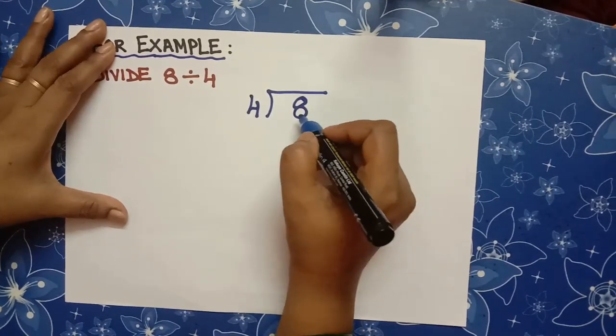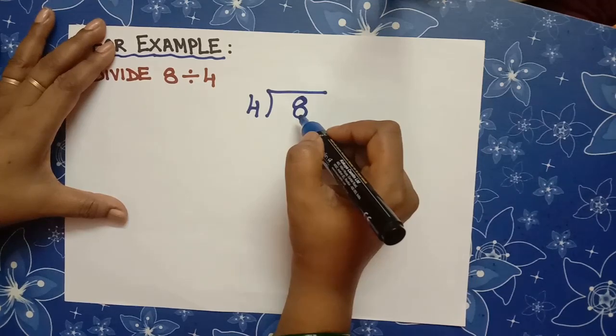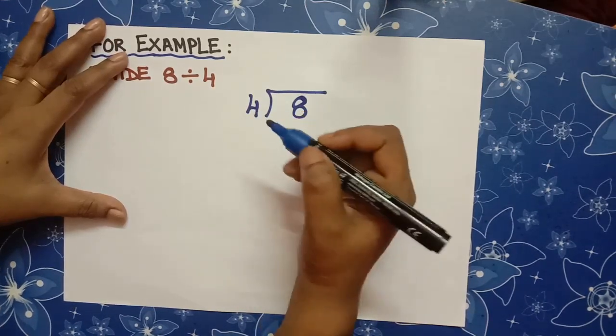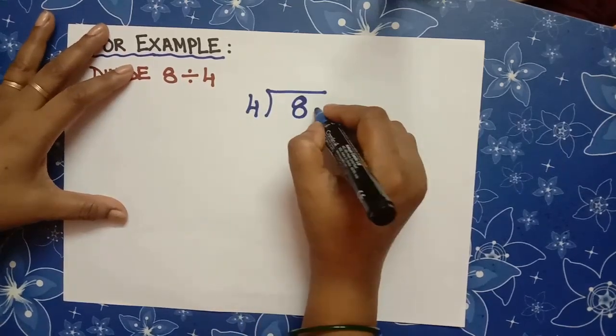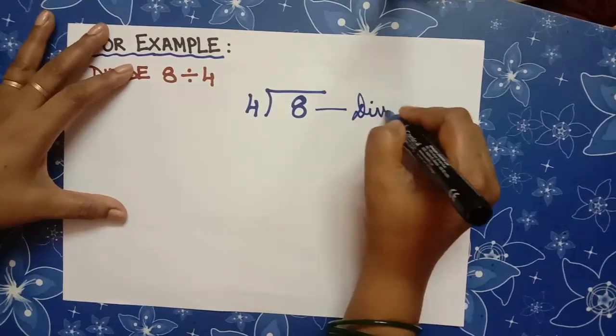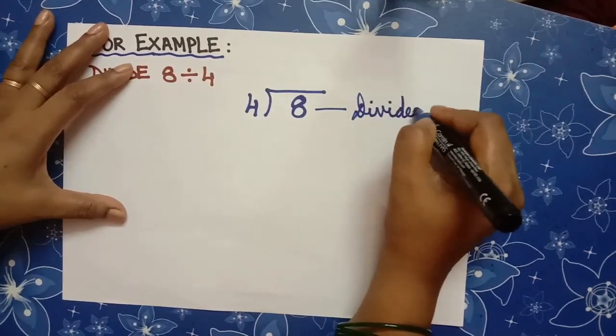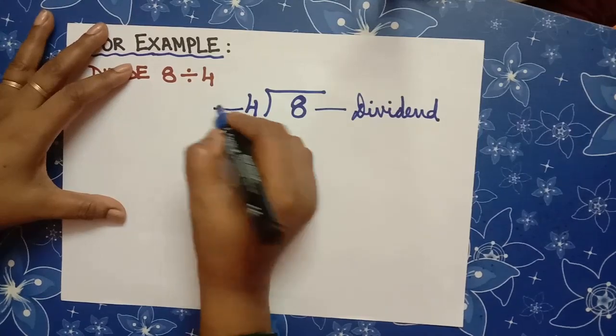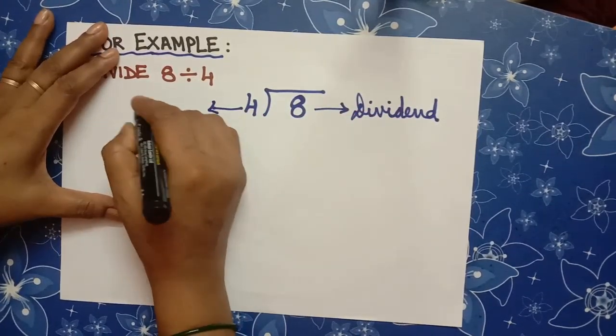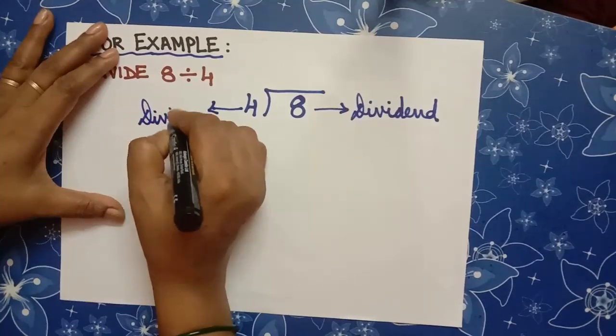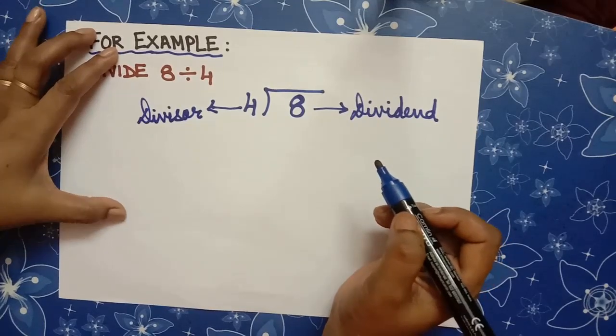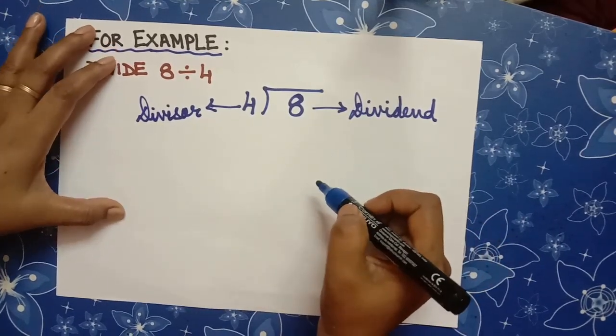Here, 8 is called dividend and 4 is called the divisor. We will have to find the quotient. Let us solve it by long division format.